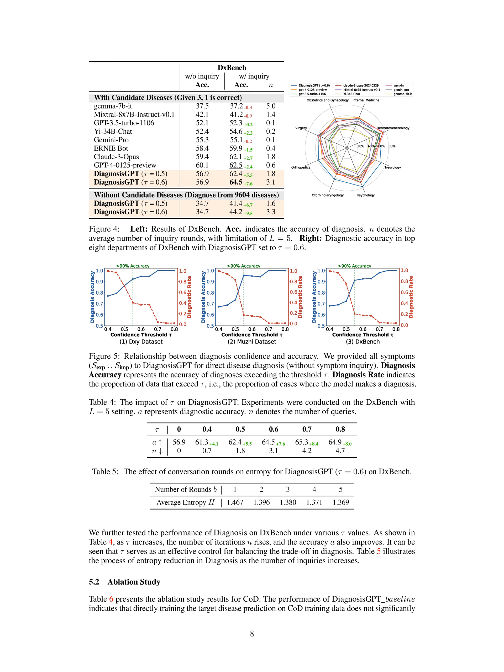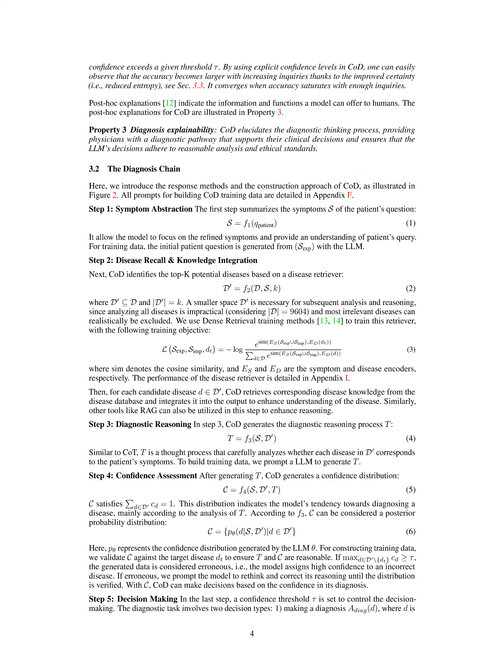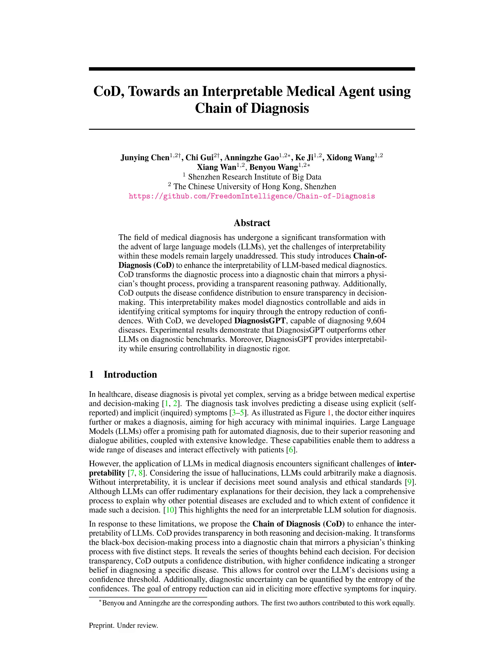Step 2 — Disease Recall and Knowledge Integration: COD identifies the top K potential diseases related to the summarized symptoms using a disease retriever. This reduces the analysis space, making it manageable, and integrates relevant disease knowledge from a database, enhancing the model's understanding of each potential disease.